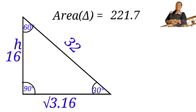So finally, the area of this triangle is 221.7 square units. If you have gained value in this lesson, kindly like, share, and subscribe to my YouTube channel. Thank you.